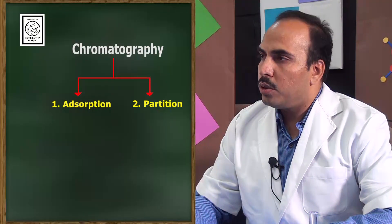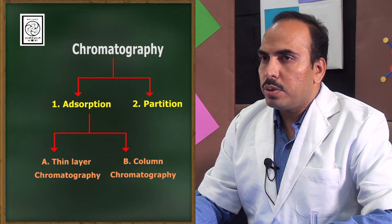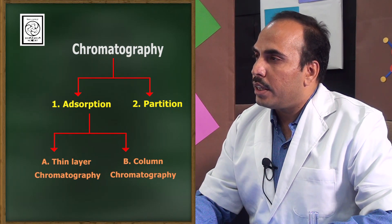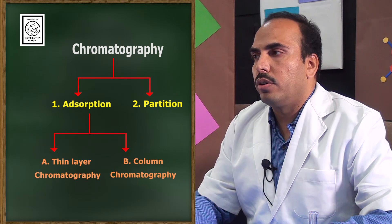Chromatography is mainly divided into adsorption chromatography and partition chromatography. Adsorption chromatography is further classified into thin layer chromatography and column chromatography. What is the difference between adsorption and absorption? Absorption occurs in the bulk of a material, while adsorption occurs on the surface of a material — it is a surface phenomenon.